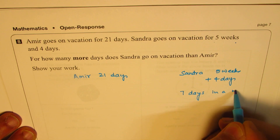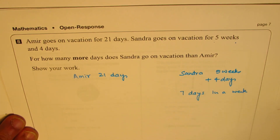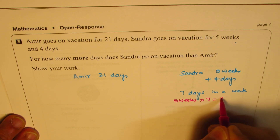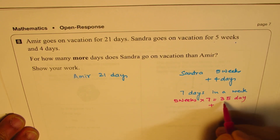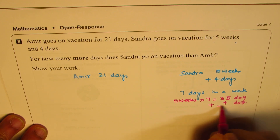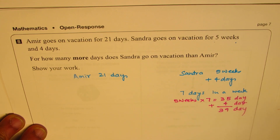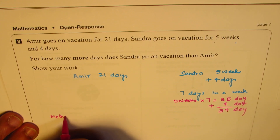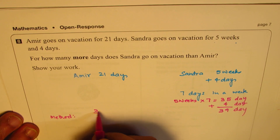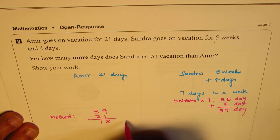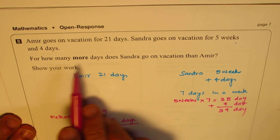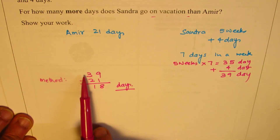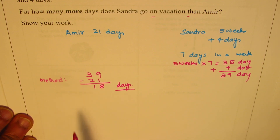One way to solve this is to convert everything into days. So we get 5 weeks times 7, which is 35 days, plus 4 days, which gives us 39 days. Sandra goes for 39 days and Amir goes for 21 days. We can find the difference: 39 minus 21 gives us 18 days. So how many more days does Sandra go on vacation than Amir? It is 18 days. That is one of the methods.